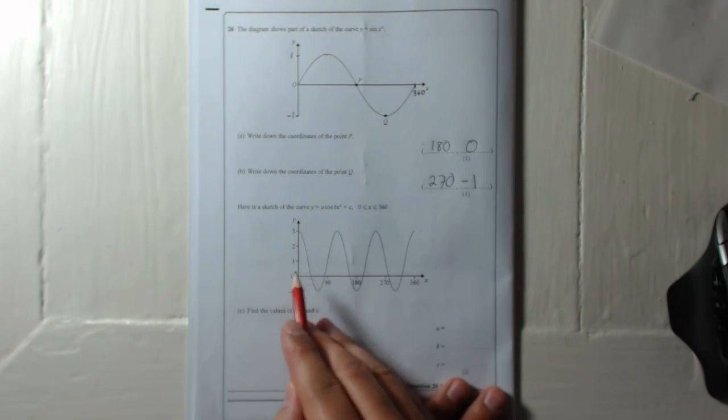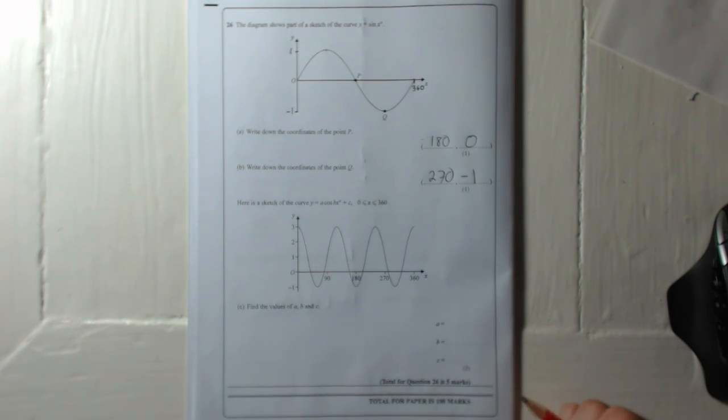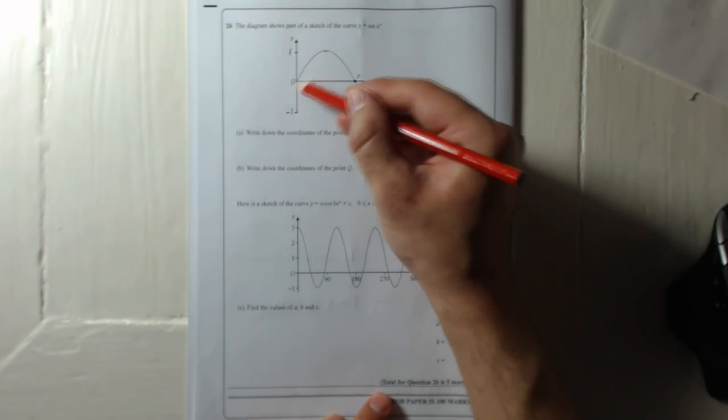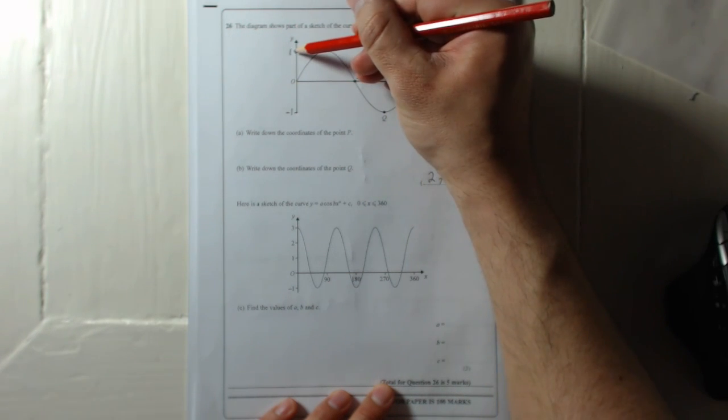Here is a sketch of the curve y equals a cos bx plus c, in between 0 and 360 again. So here it actually tells us 0, 360. Find the values of a, b, and c. Now if you were to google a cosine curve, remember this is the sine curve that starts at 0. Now what a cosine curve does—it starts at 1.